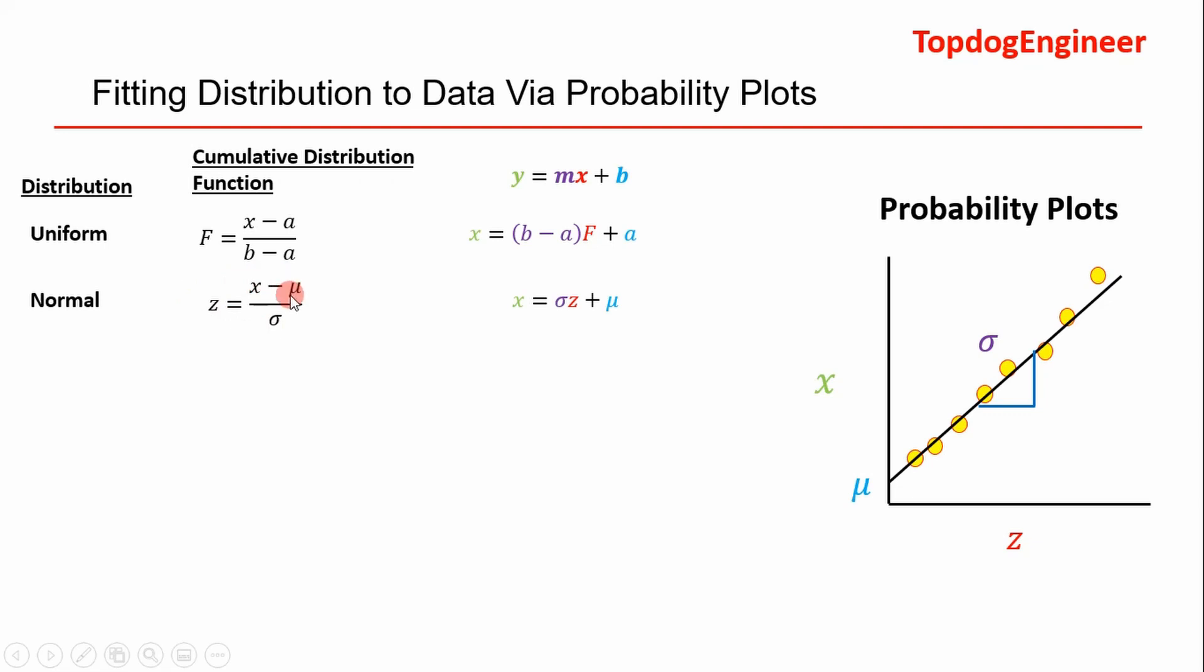The same thing for the normal distribution—this is the cumulative distribution function for the standard normal distribution. You can see here we can rearrange this algebraically, put it in the form of a straight line, and we can put our data on there, x versus z, and then our slope is going to be our standard deviation and the intercept is going to be our mean of that data.